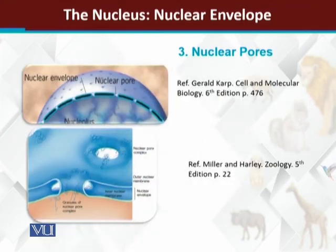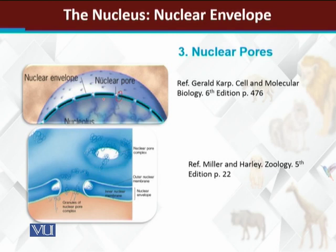Here is the structure of the nuclear pore. If we look at it, the black area between the outer and inner nuclear membrane shows that both nuclear membranes are separate. Only at the position of the nuclear pore are both directly linked and joined to each other.